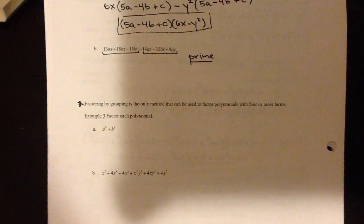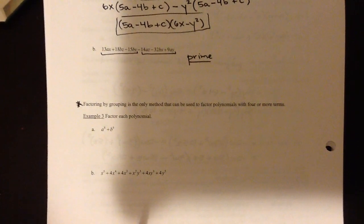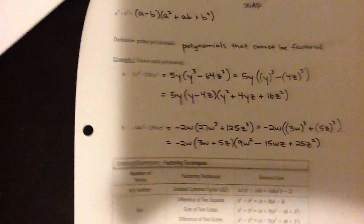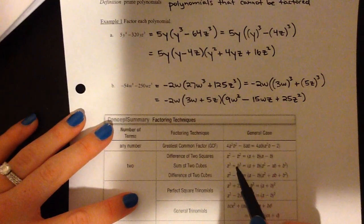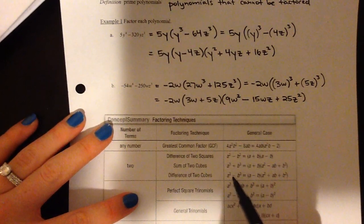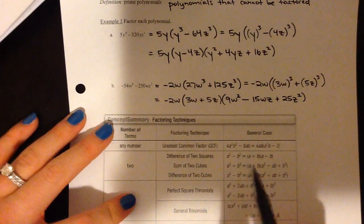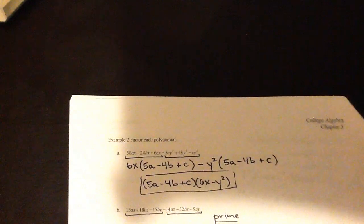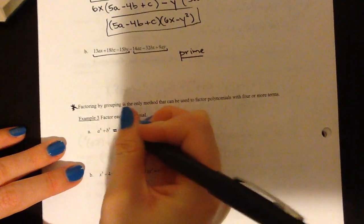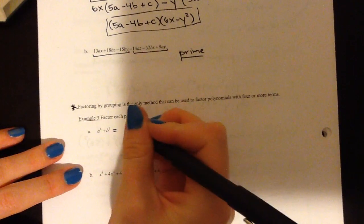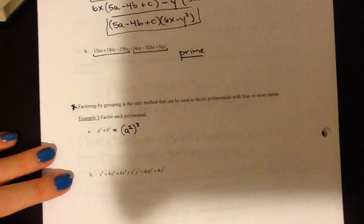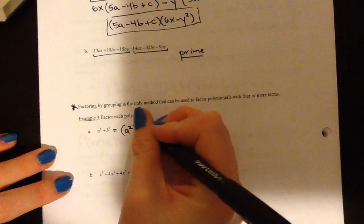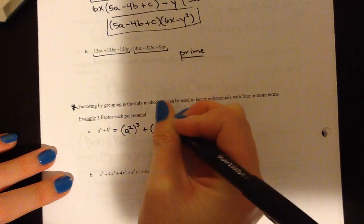Example three: we're going to factor these polynomials down. So a to the sixth plus b to the sixth. Let's practice going back to that handy chart. There are two terms, so we have three different possibilities. We know it's not the difference of squares because it's not a difference. It might be the sum of cubes — and it can't be the difference of two cubes because it's not a difference either. Only addition applies, so it's got to be the sum of two cubes. We've got to write it as something cubed plus something cubed. What do we cube to get a to the sixth? That would be a squared — a squared multiplied by itself three times gives a to the sixth. Same for b to the sixth: that would be b squared to the third.